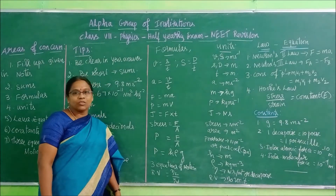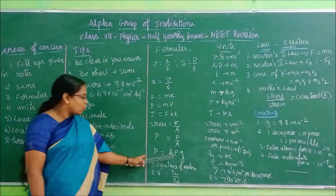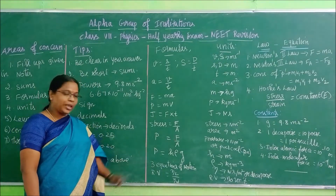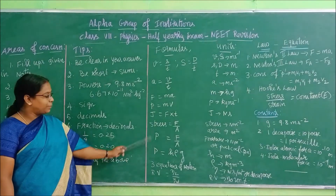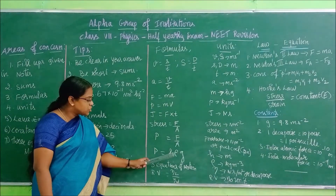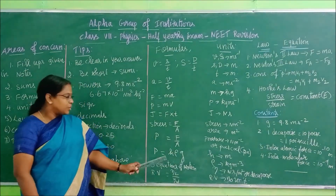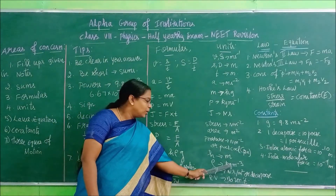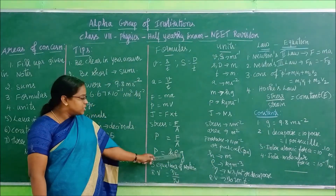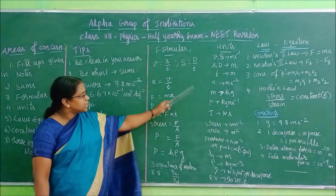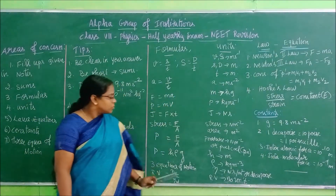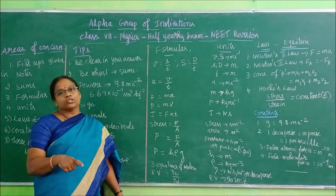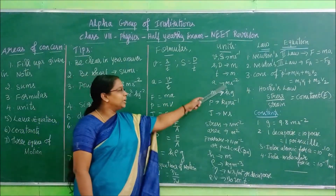On pressure, P = hρg. And we have P = F/A - both formulas give you the pressure. In P = hρg: h is the height with unit meters; rho (ρ) is the density with unit kilogram per meter cube; and g is acceleration due to gravity - we have already written it - so it will have the unit meters per second square.